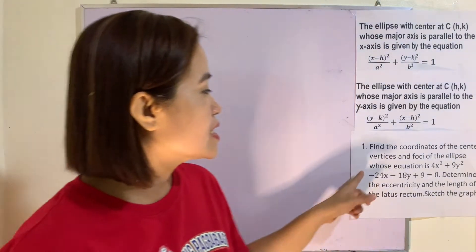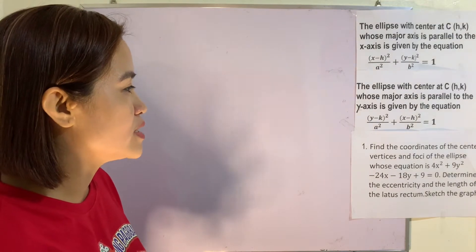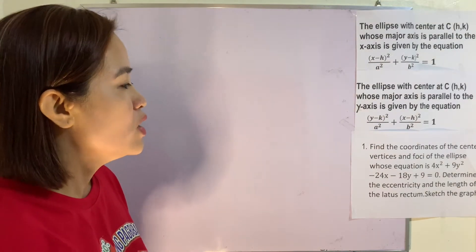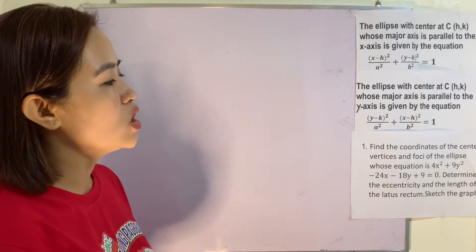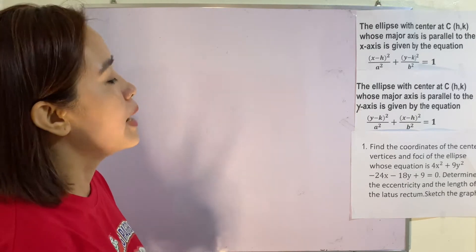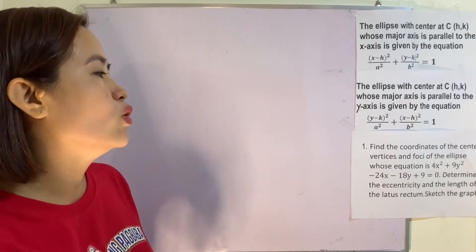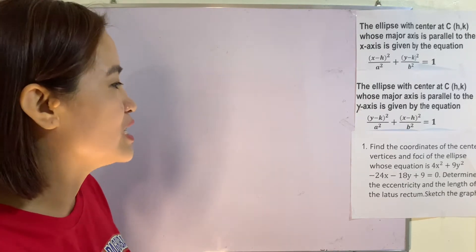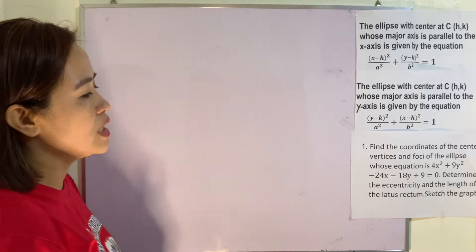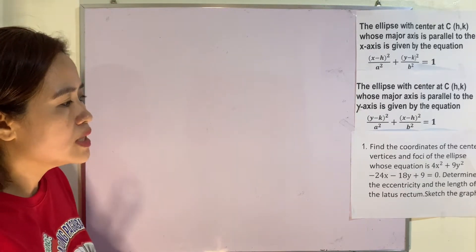Let's take Example 1. Find the coordinates of the center, vertices, and foci of the ellipse whose equation is 4x squared plus 9y squared minus 24x minus 18y plus 9 is equal to 0. Determine the eccentricity and the length of the latus rectum.